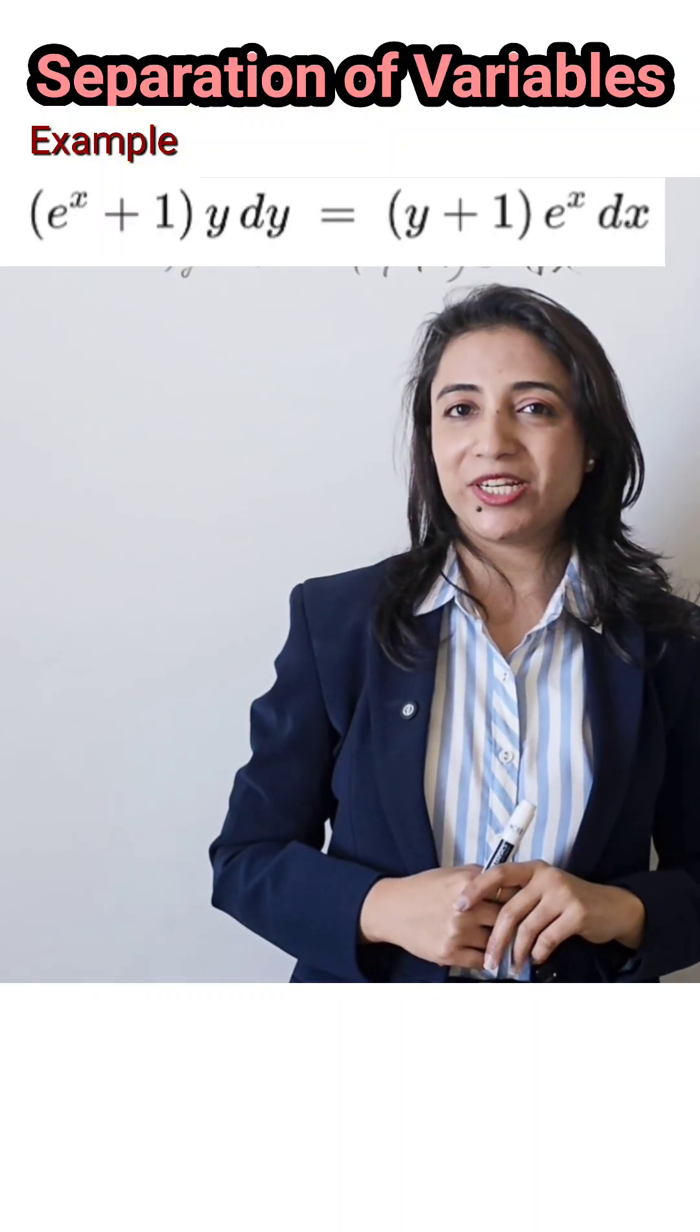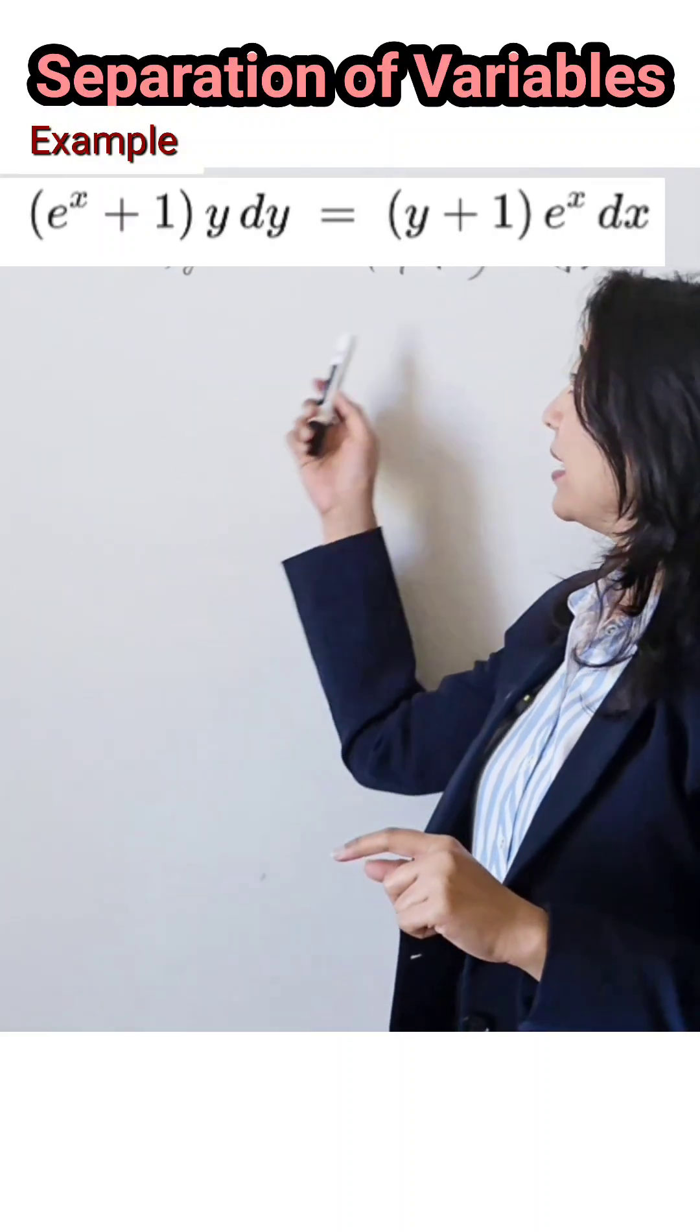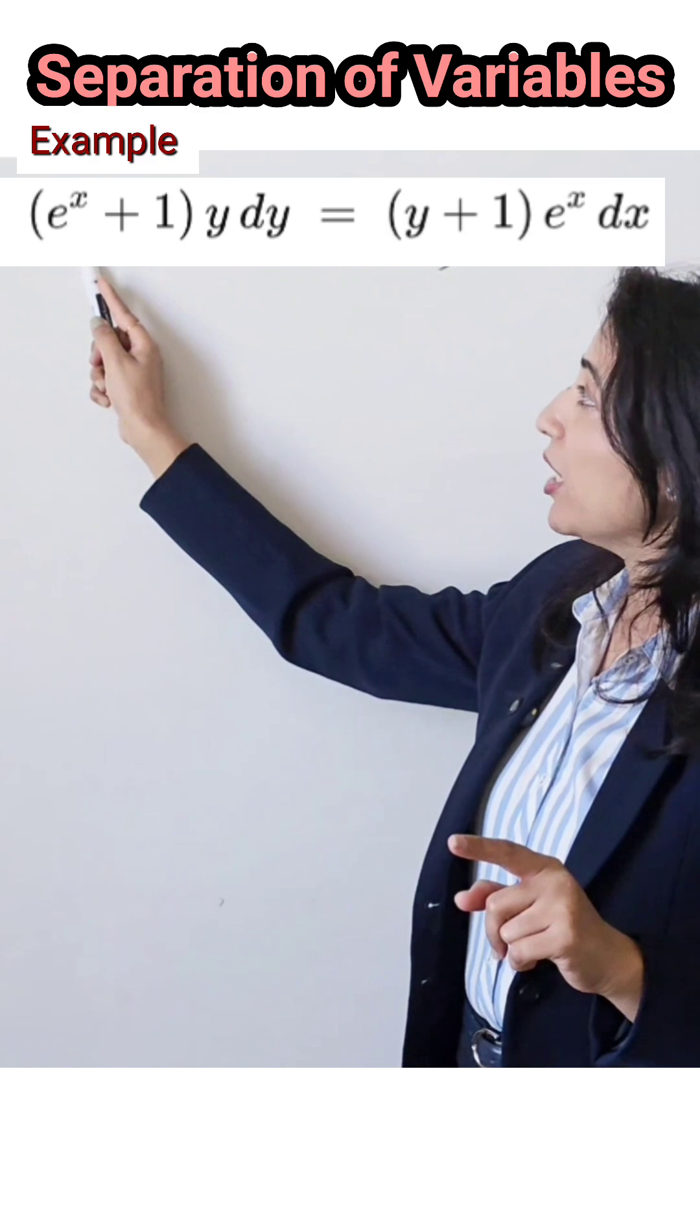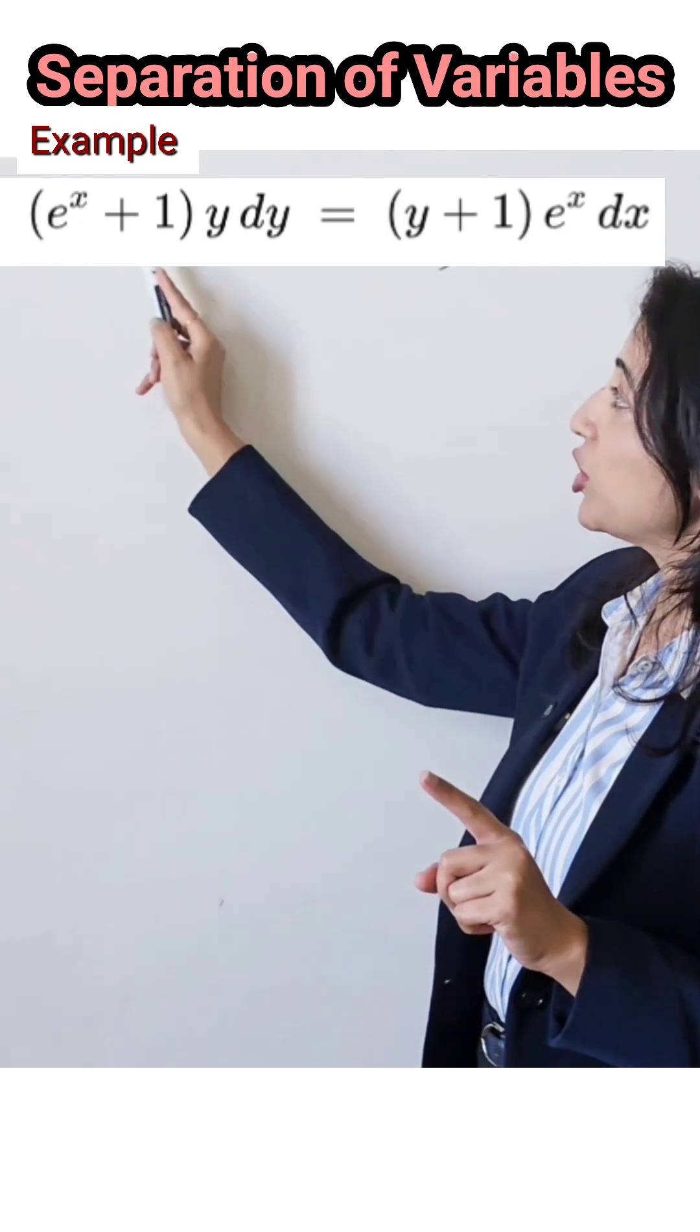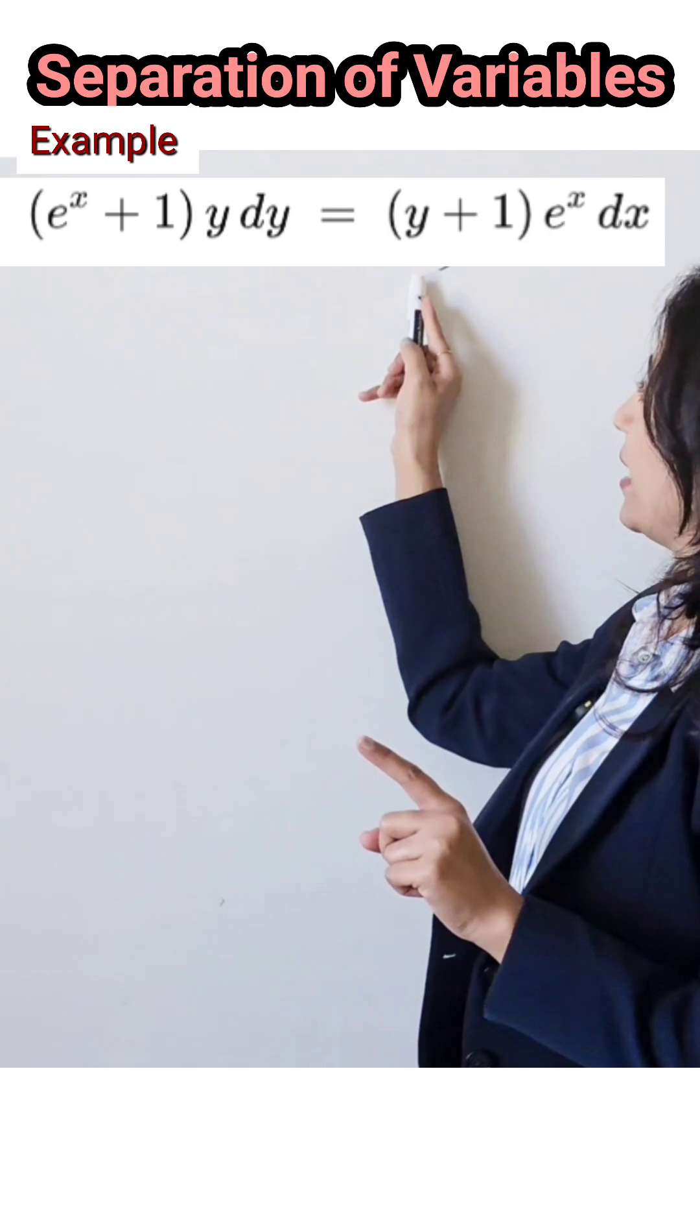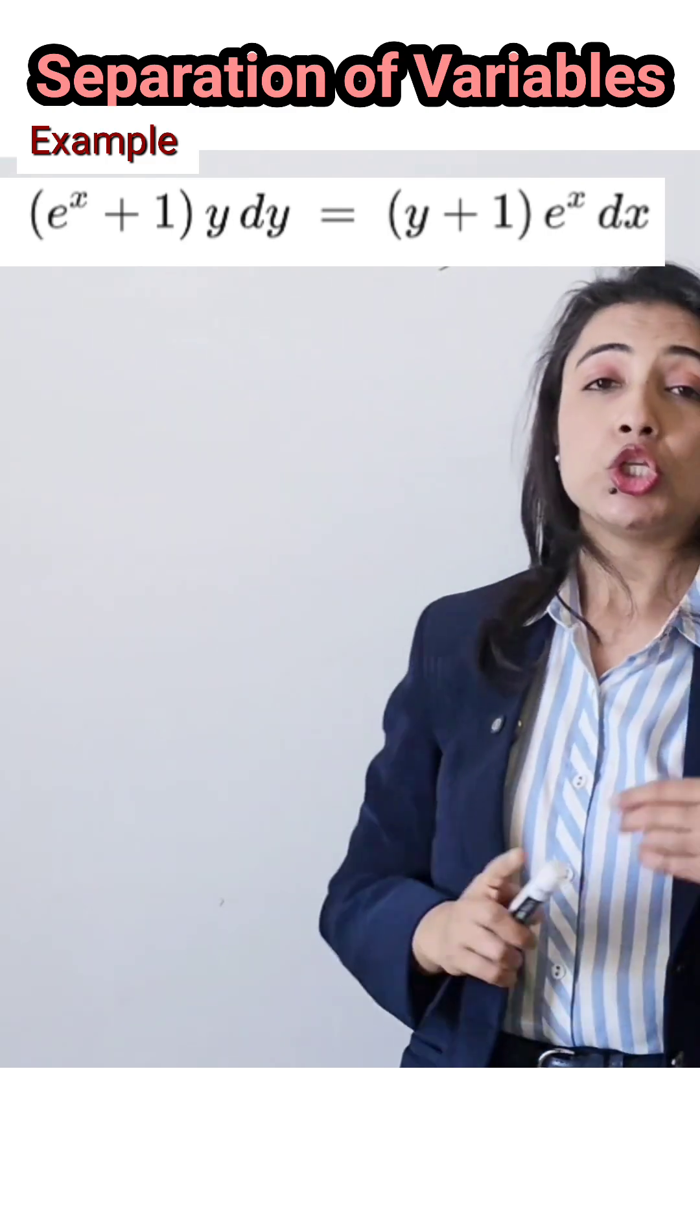How to solve a first order, first degree differential equation is very simple. For example, here is a question. If the function of x and function of y are in the form of a product, like here it is an x function multiplied by y, and here it is an x function multiplied by y, you can apply the variable separation process.